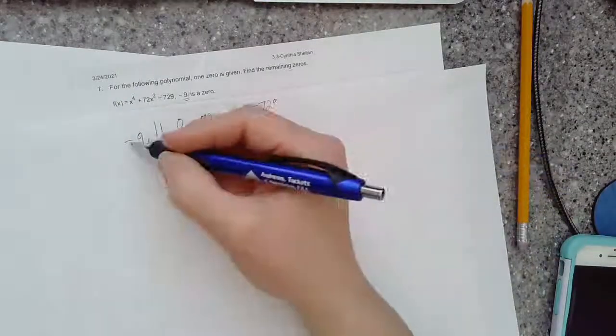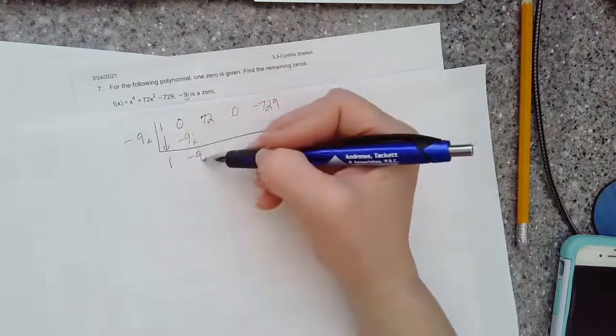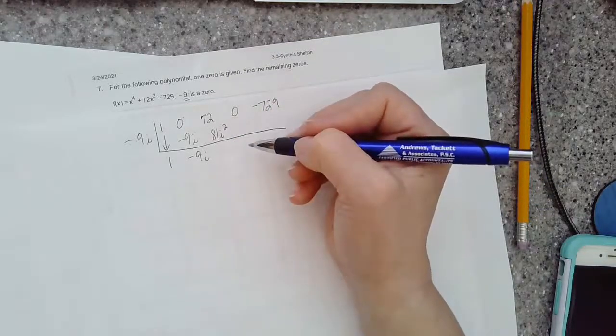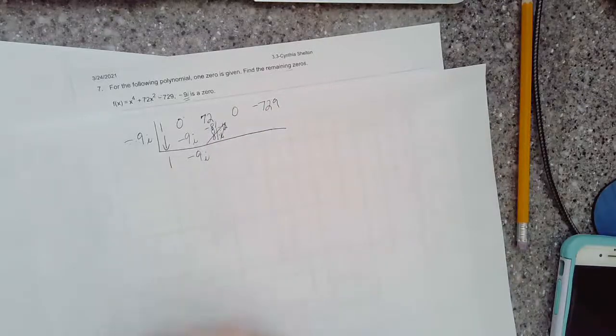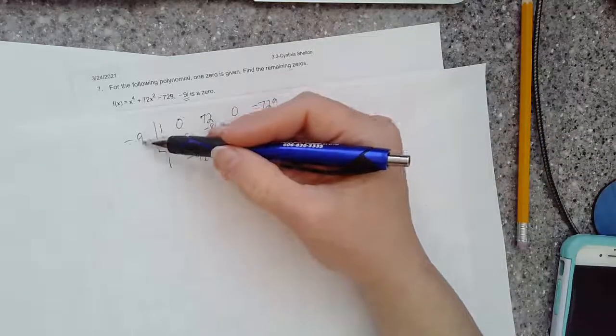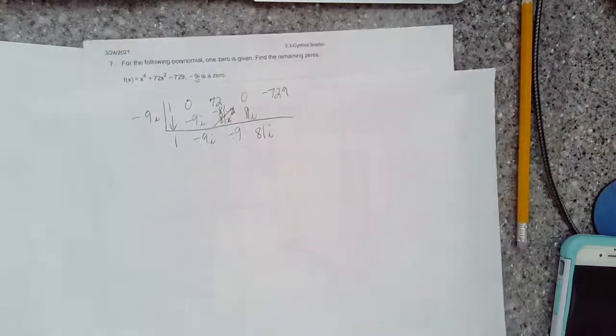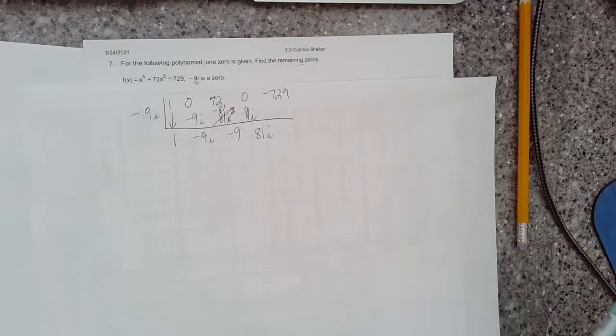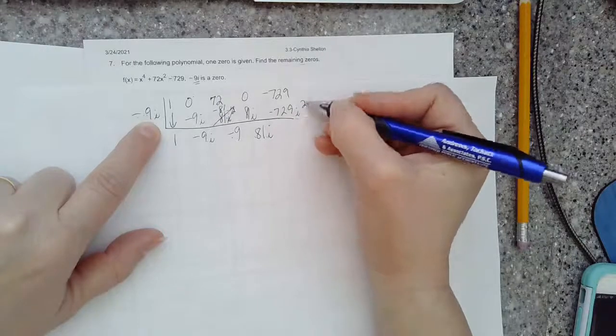Bring down 1. Zero plus negative 9i is negative 9i. Multiply. Negative 9 times negative 9 would make positive 81, and i times i is i squared. So you've got 81i squared. But i has a known value of negative 1, so that's 81 times negative 1, making negative 81. 72 minus 81 is negative 9. Then we multiply. Negative 9 times negative 9, that's 81. There's only one i there this time, so it's 81i. Then one last time, 9 times 81 is 729. It's negative because negative times positive, but then I've got i times i, i squared, which always changes its sign, making it positive 729. So that's all perfect, gives me my zero remainder.